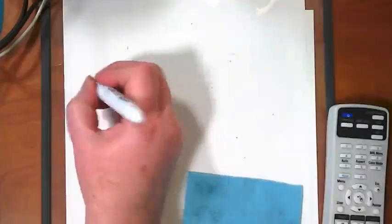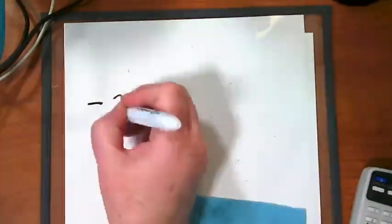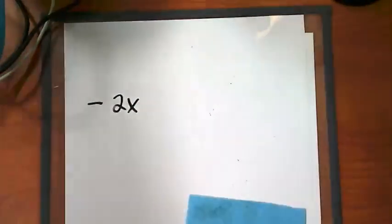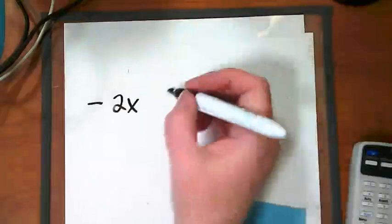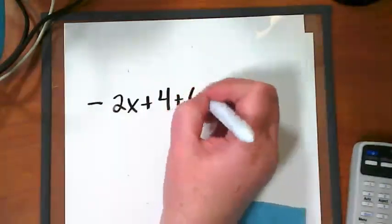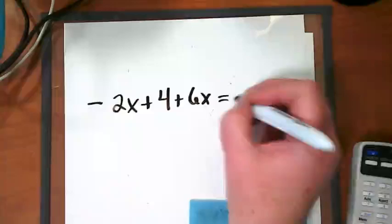Okay, so our first problem—I'm looking on the screen that's not showing us, but that was frozen, there we go. Our first problem is negative 2x plus 4 plus 6x equals 12.